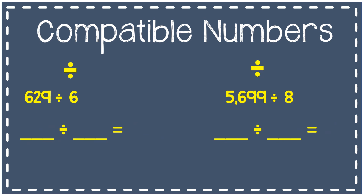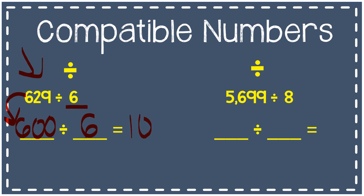Now let's look at some division examples. Division can sometimes be challenging with compatible numbers because you have to know your facts really well. First example: 629 divided by 6. I'm going to round this to a number that is compatible with 6, or divisible by 6, and the easiest one that comes to mind is 600. So 600 divided by 6 — I know that's 100. 600 and 6 are compatible, and much easier to divide to get an answer close to the original.